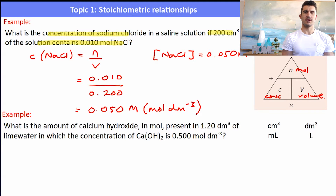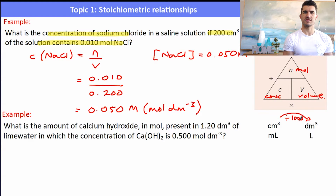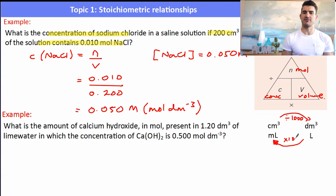Remember: to convert from cm³ to dm³, divide by 1000; to go from dm³ to cm³, multiply by 1000. The same applies to liters and milliliters.